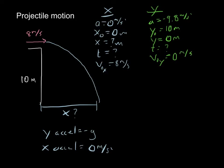I notice right away that in the x direction I'm missing two variables, whereas in the y direction I'm only missing one. That's a clue for how to find x. I can't find x without time, and all of my equations have time in them. However, I can find time from the y direction, and that time — the time it takes to fall — is the same time it takes to cover the horizontal distance.